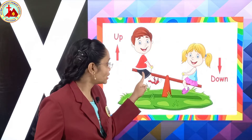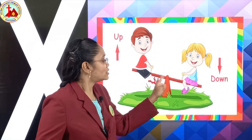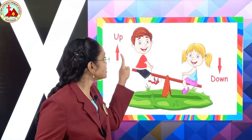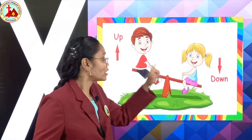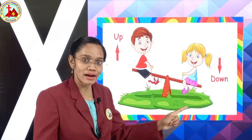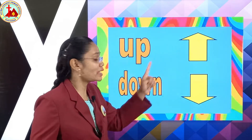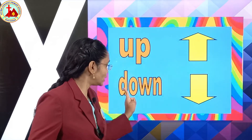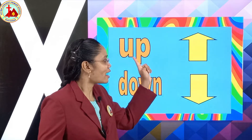This is up. See, the boy is up — they are sitting on a seesaw. Do you like to sit on a seesaw? These two children are sitting on a seesaw. The boy is up and the girl is down. Up, down. Opposite of up is down. This arrow is going up and this arrow is going down — D-O-W-N. Opposite of up is down. Opposite of down is up.